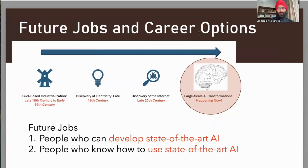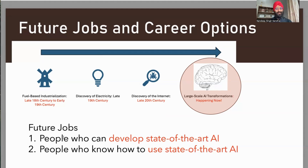Let me touch on future jobs and careers. Just like the discovery of the internet and electricity in the 19th century, or fuel-based industrialization in the late 18th century — all these discoveries changed the future. Internet and electricity have impacted us in every way, and the AI change happening now is actually changing things in the same way. All jobs and careers are going to be impacted. The future jobs will be with people who can develop state-of-the-art AI, or people who know how to use it.